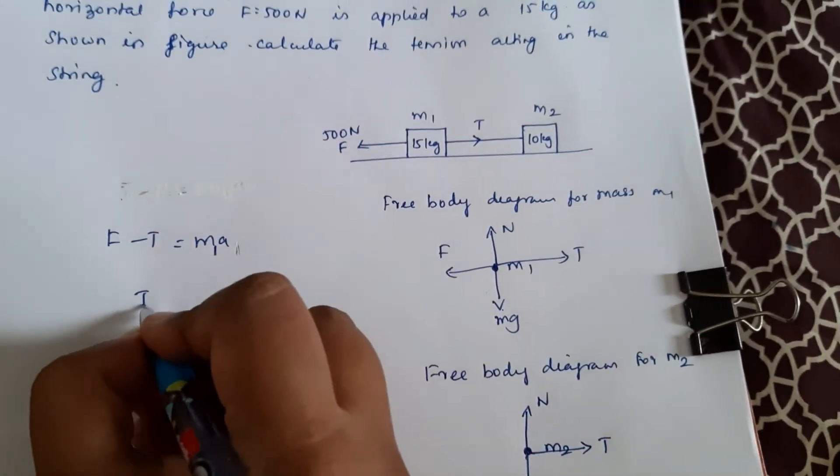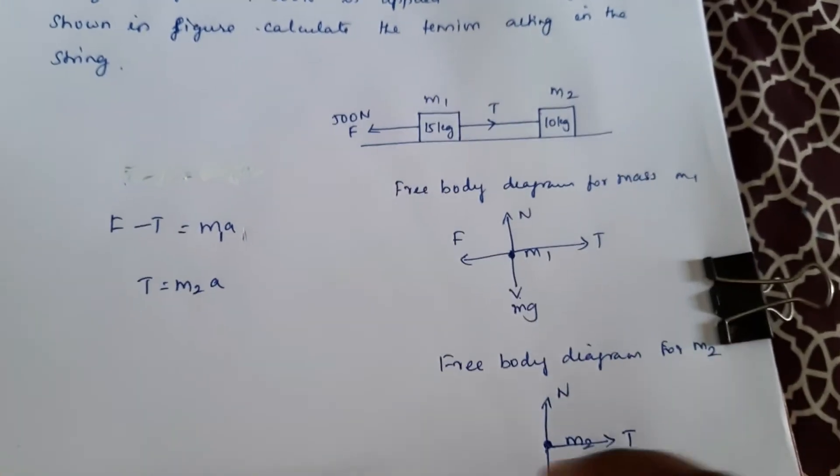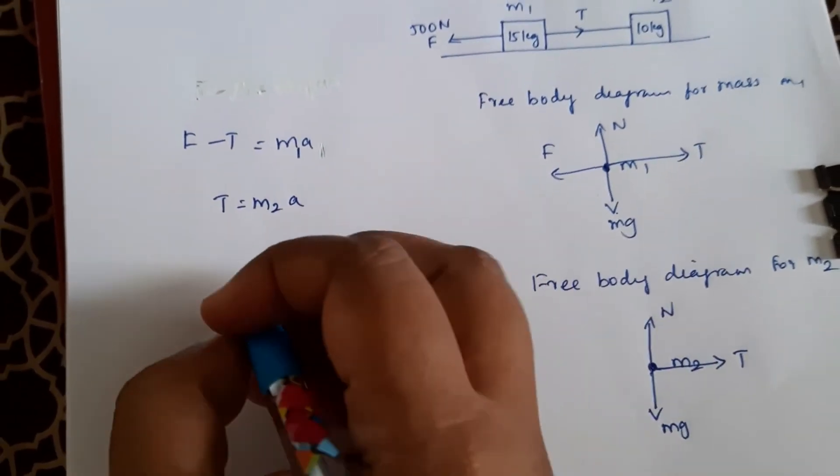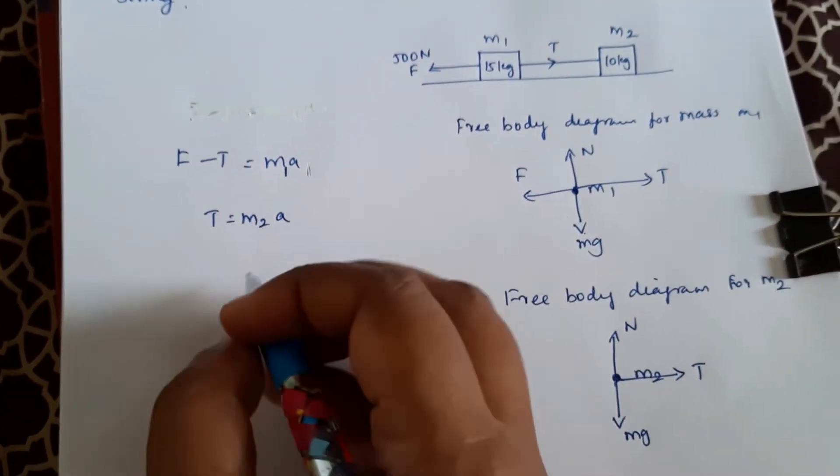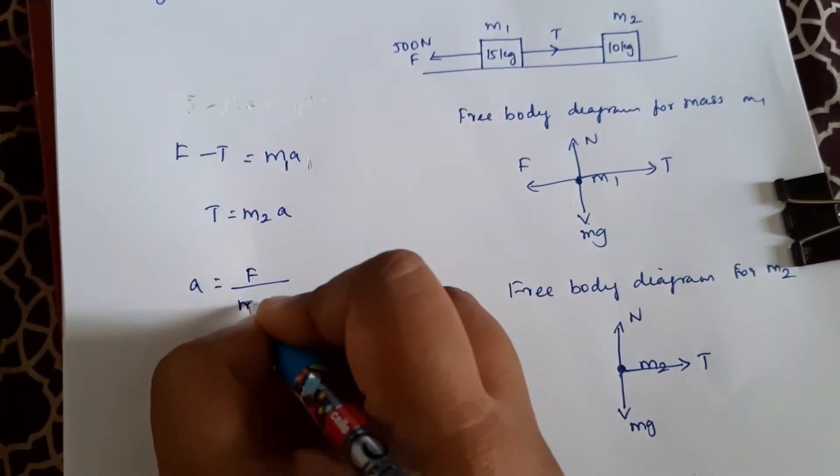So we can write T equals m2a, because the acceleration is in the x direction. Now when the bodies are connected, we know a equals F divided by m1 plus m2.